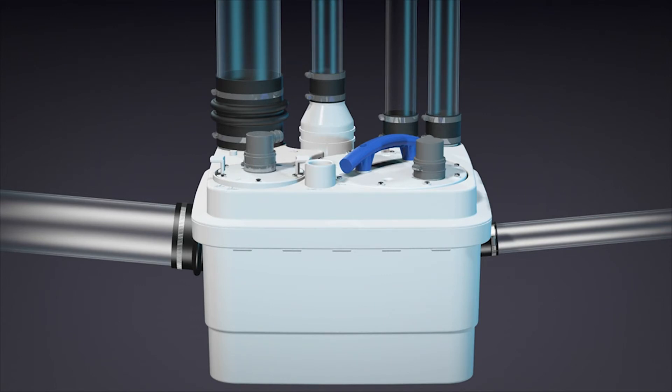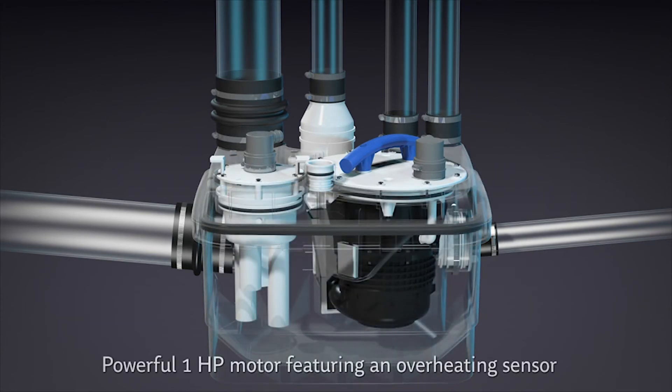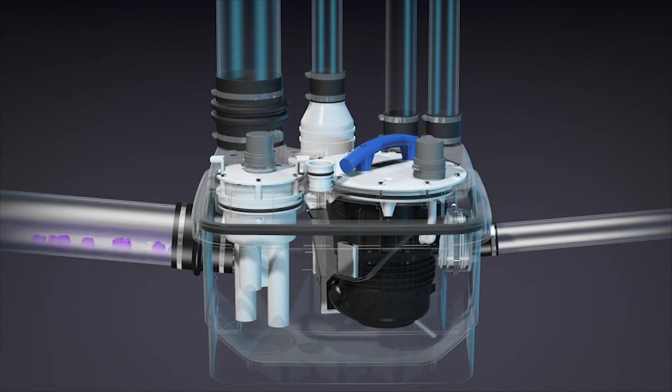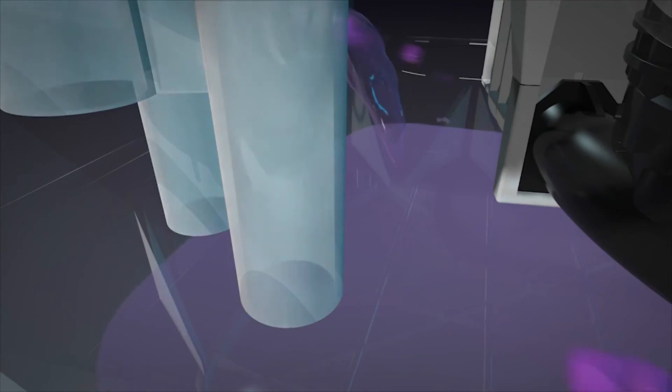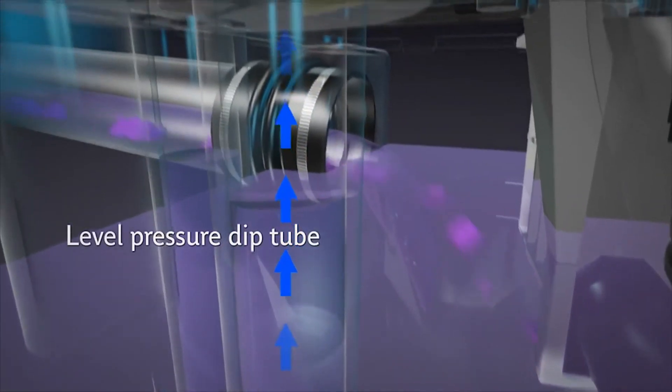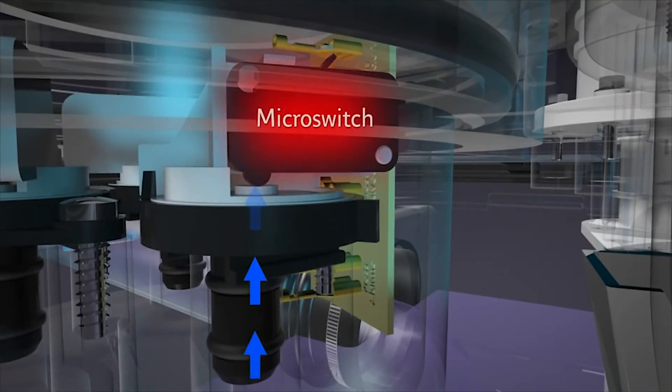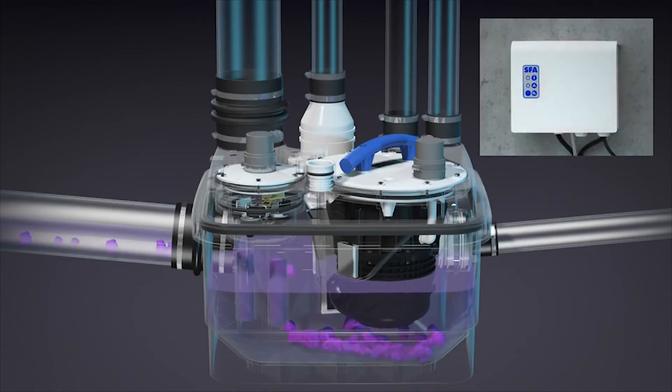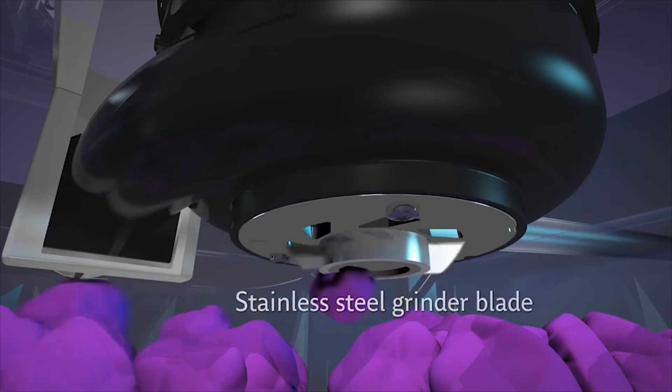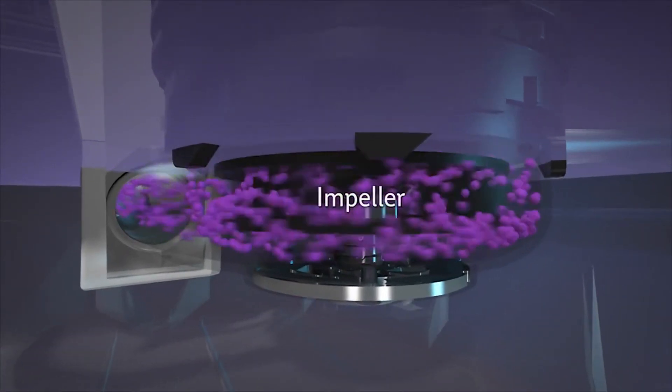The Sanicubic One features a powerful 1-horsepower motor with thermal overheat sensor which prevents it from overheating. Wastewater drains into the pump through a gravity-fed pipe. The water level inside the pump rises and causes the trapped air to travel through the level pressure dip tube. Air creates pressure which forces the pressure level micro-switch to be activated and turn on the system. The stainless steel blades grind the waste while the impeller gets rid of the already liquefied waste.